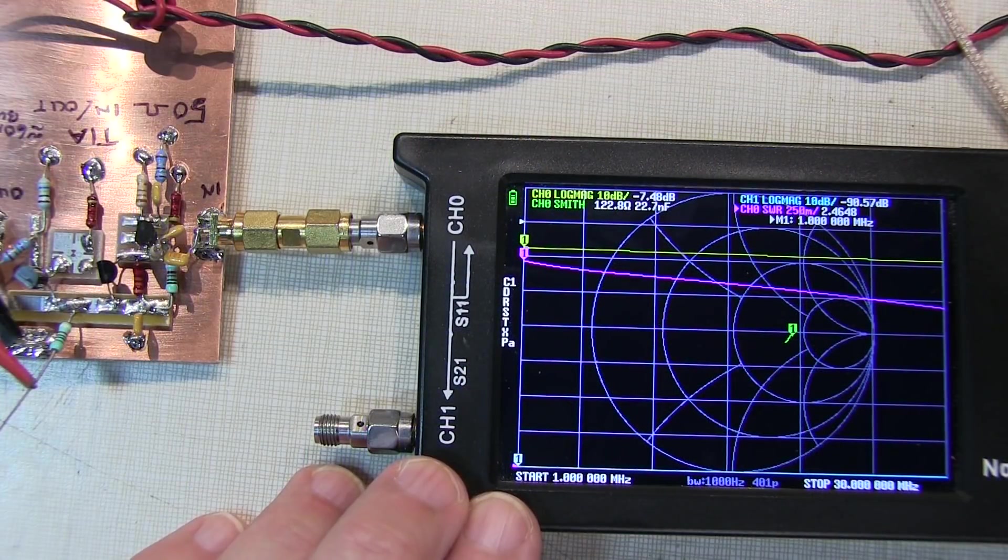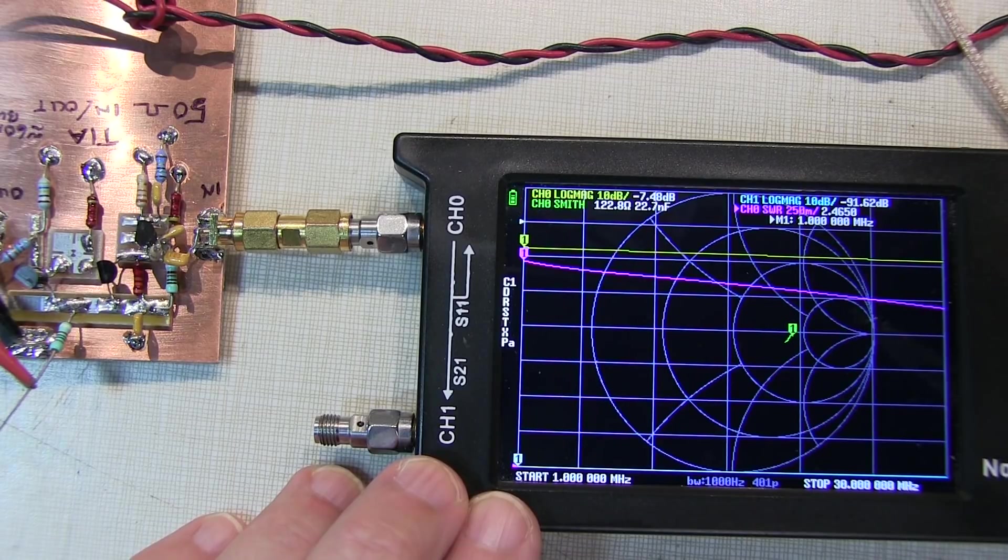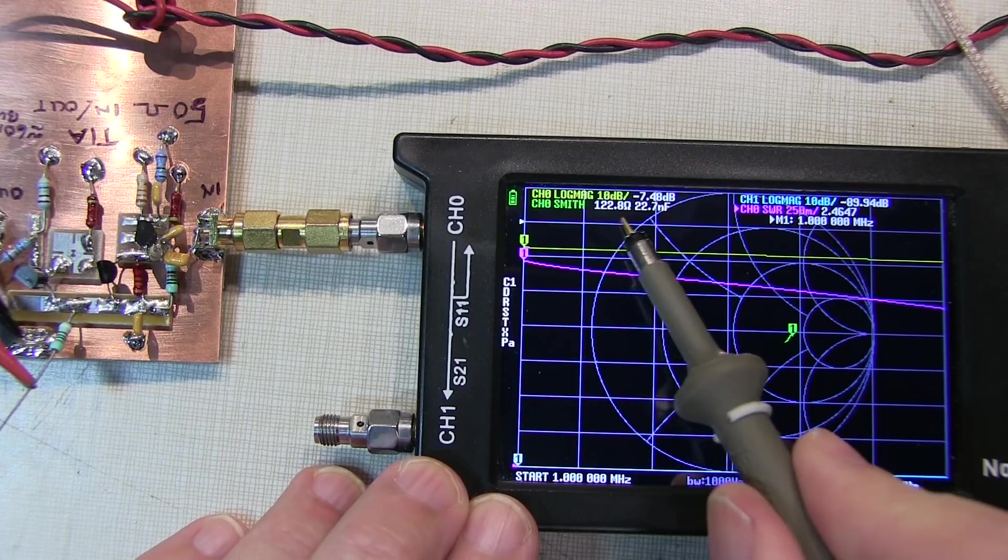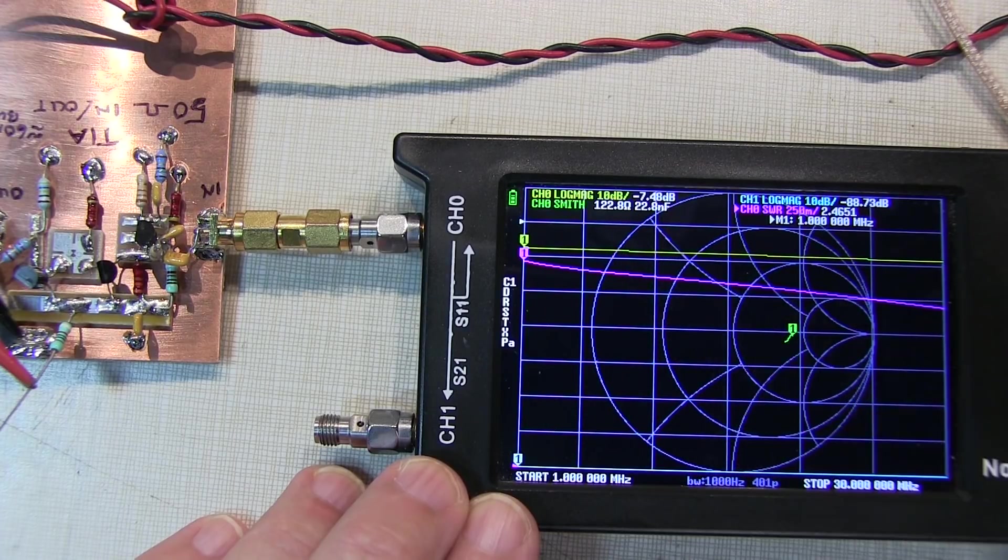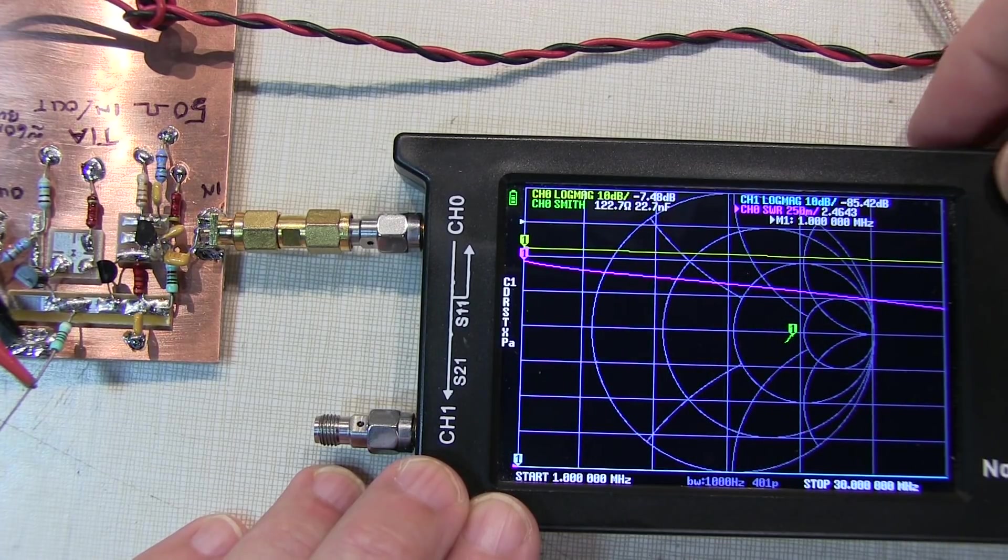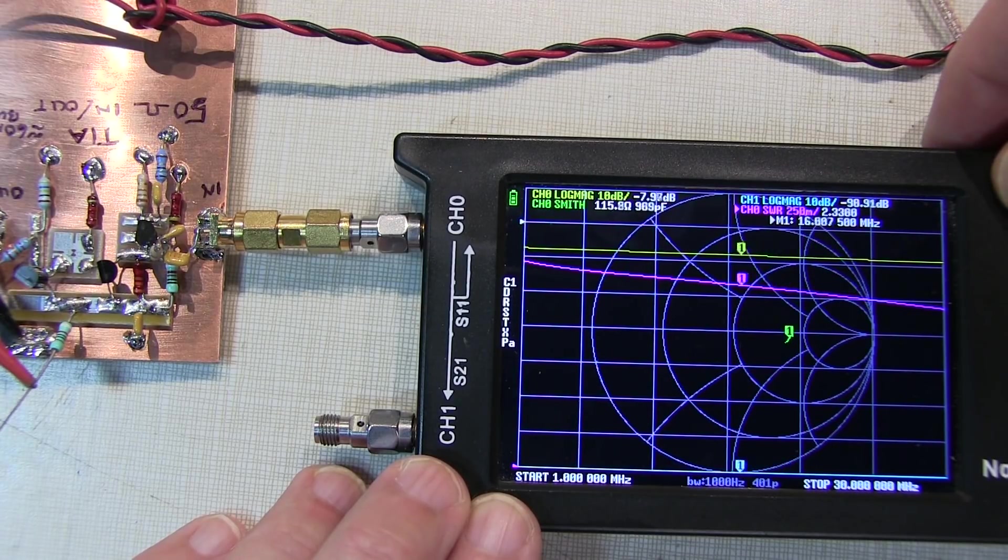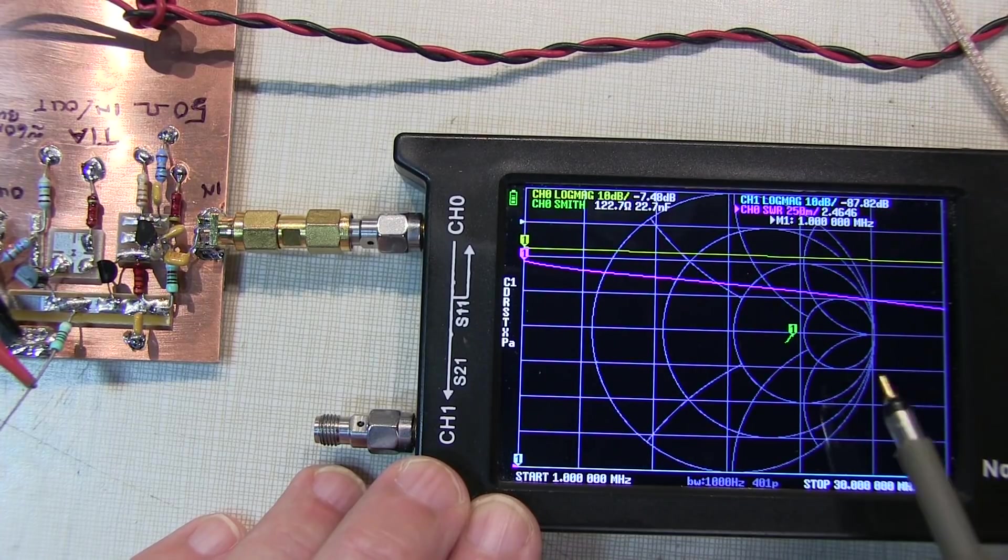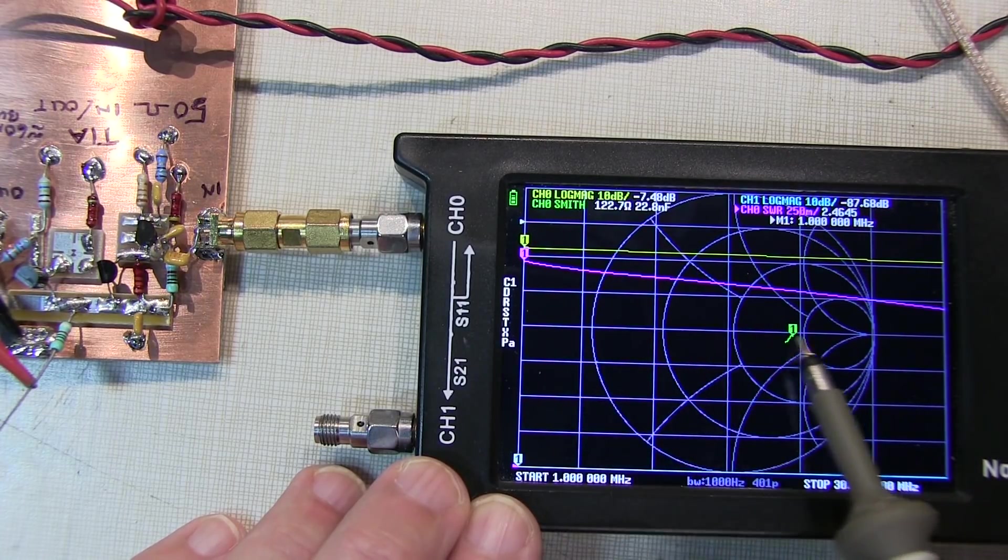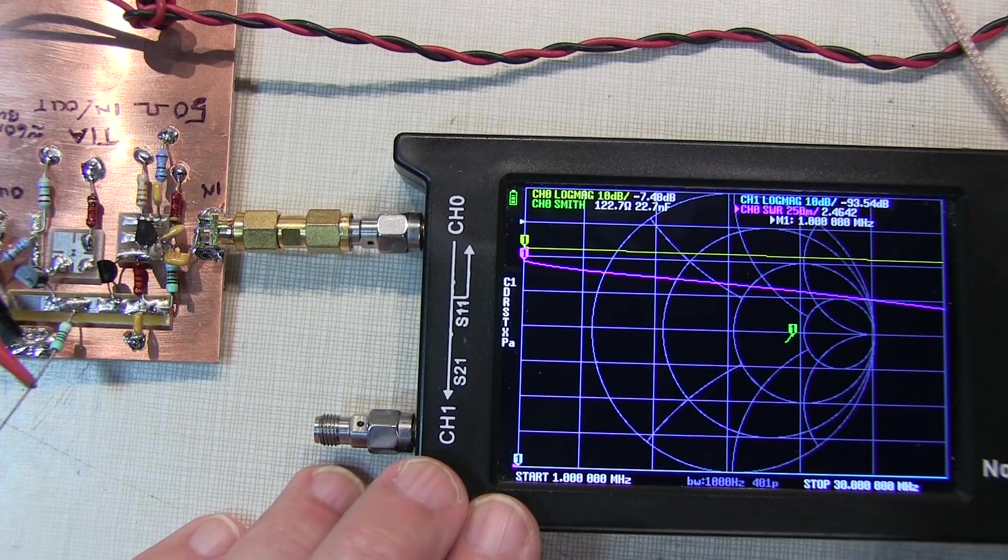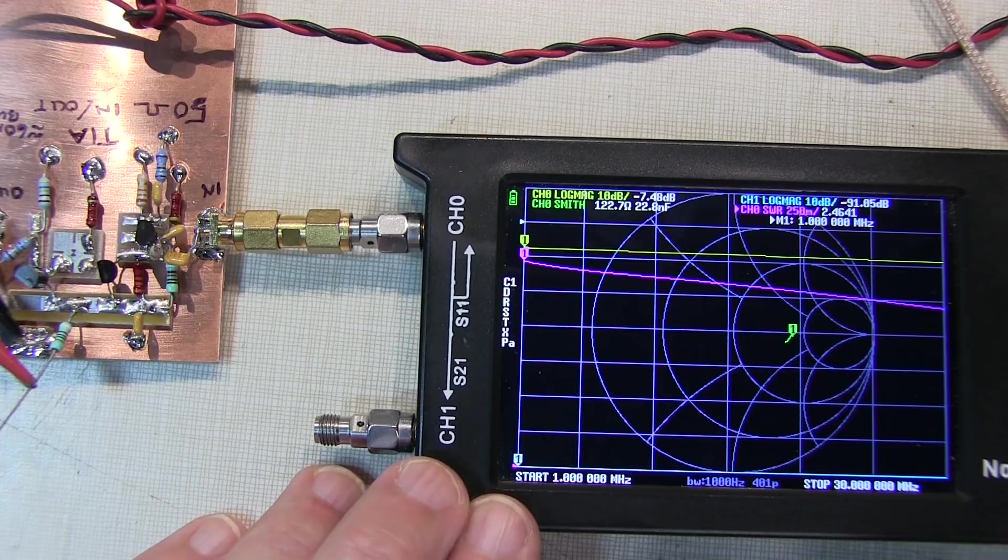So this is the confusing result that Bill got. Instead of seeing 50 ohm input impedance, he's seeing in the order of about 122 ohms, along with 22 pF. And again, if I move across in frequency, we can see it's not moving that much. It's largely resistive. I mean, it's very close to the horizontal axis in the Smith chart, so it's largely a resistive impedance, but 122 ohms and not 50. So what's going on here?